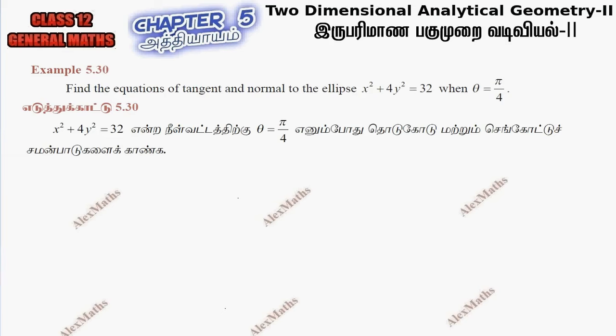Hi students, this is Alex here. Example 5.30. Find the equations of tangent and normal to the ellipse x² + 4y² = 32 when θ = π/4.